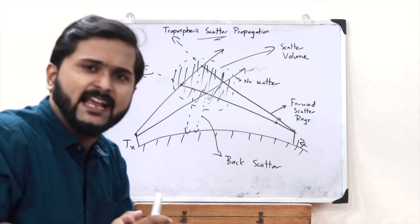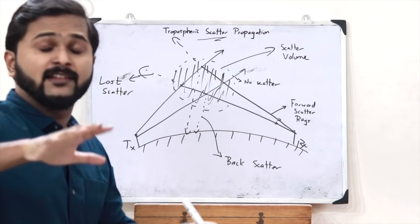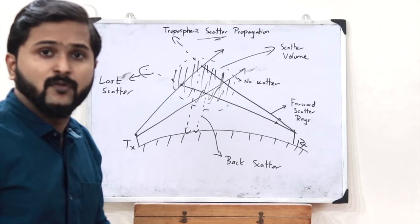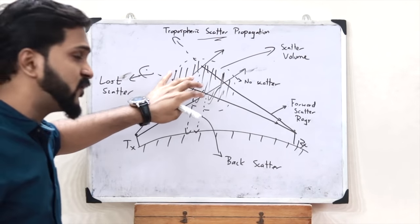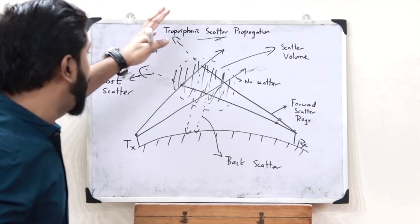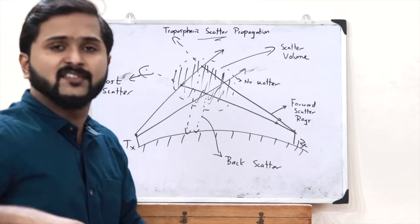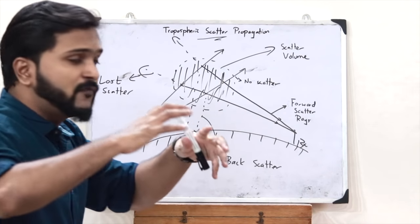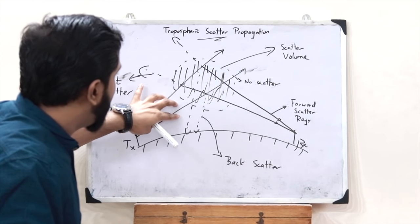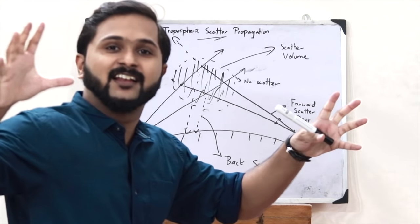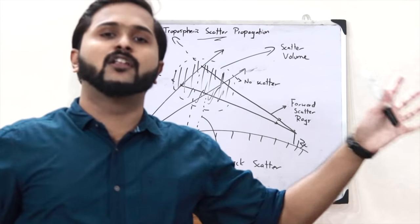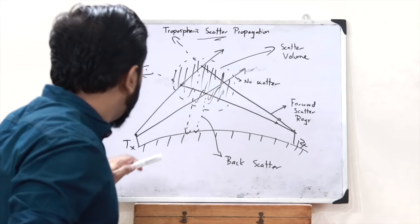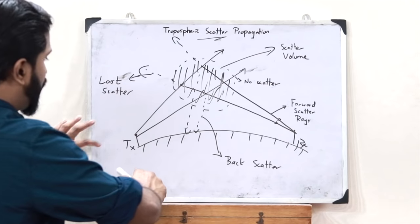The reason scattering happens in the troposphere is not fully known, but we assume two causes: first, the presence of dust particles, water vapors, and similar particles; and second, reflection from atmospheric layers. In tropospheric scatter propagation, only a small amount of the transmitted signal is received at the receiver — the rest gets scattered in all directions and is lost.